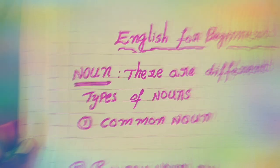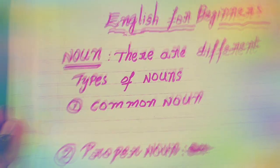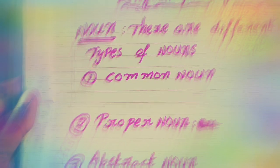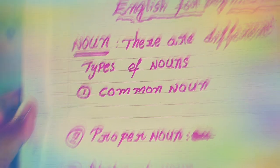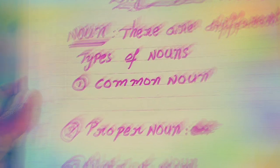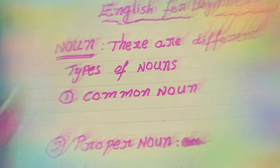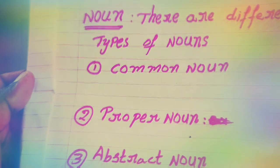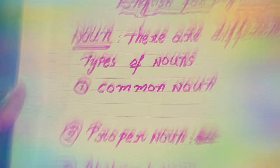Proper noun is the name of a particular person, place, river, or mountain. Proper noun gives us information about a person's name, place name, river name, or mountain name. For example, John, Michael, Raheem — these are person's names. The Pacific Ocean is an example of an ocean name.